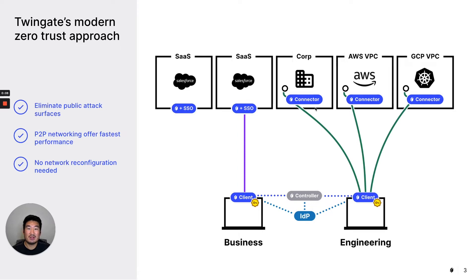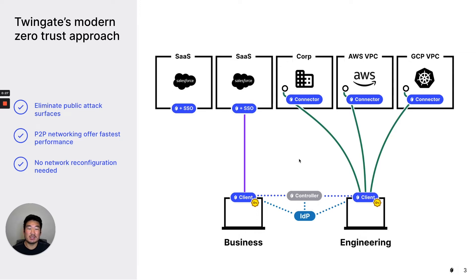Think about the connector as a software-defined proxy that sits behind the firewall across any arbitrary number of network segments. Because all the routing and resolution happens at the connector, and because it's completely invisible to the public internet, it replaces brittle VPN gateways that can be attack surface areas that we all know shouldn't exist.